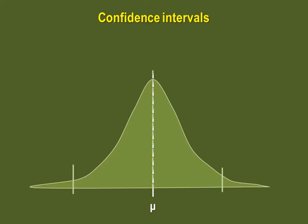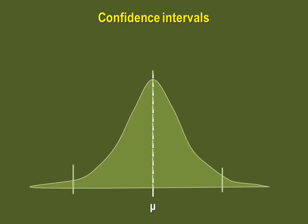So how do we determine Z sub alpha over 2? Say we wish to determine a 95% confidence interval. Well, we know that the area under distribution is 1. A 95% confidence interval would span as so, meaning that our alpha would be 1 minus 0.95 for 0.05.